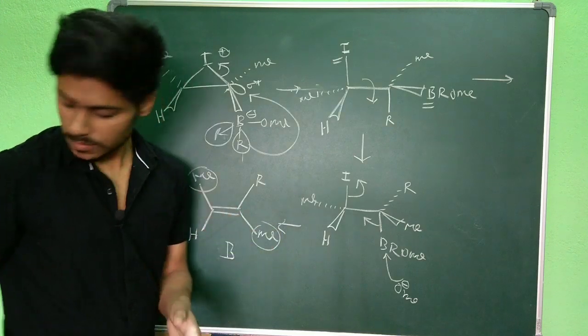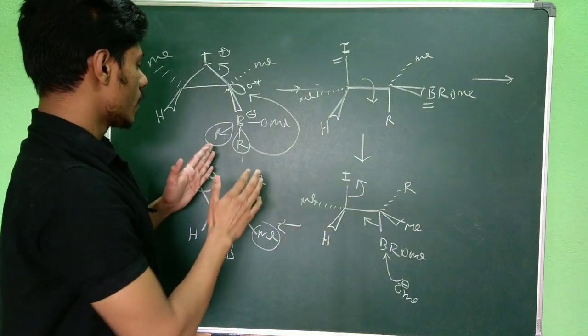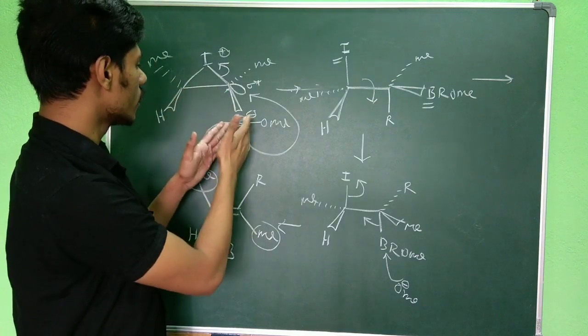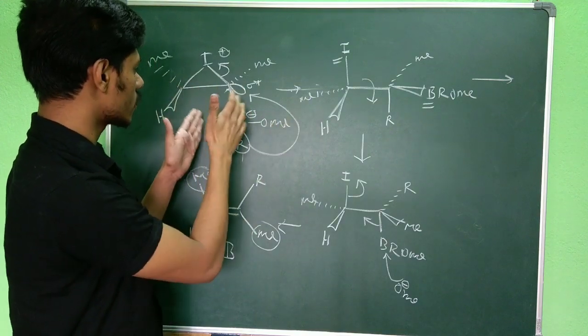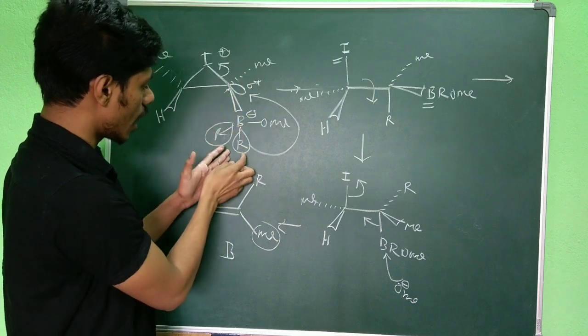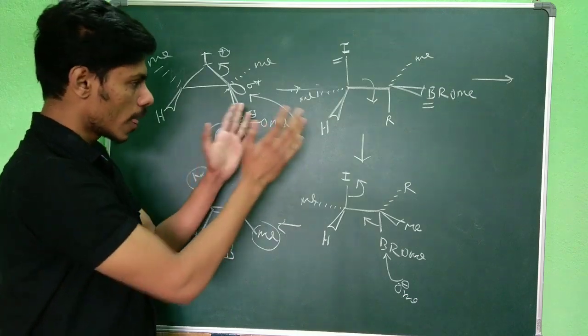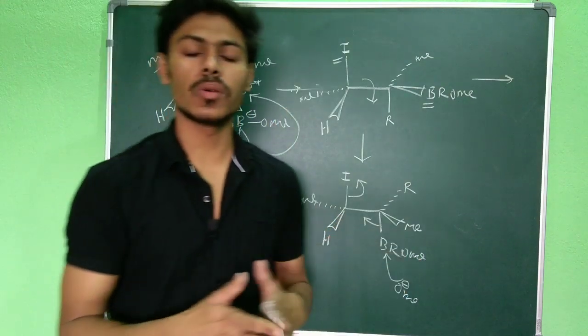It is very simple. The only difference here is because of the presence of this R group. Instead of undergoing the elimination reaction or some other reaction over here, this R group is migrated to here. So the presence of this R group is very important here. That's all and I hope that you understand the concept.